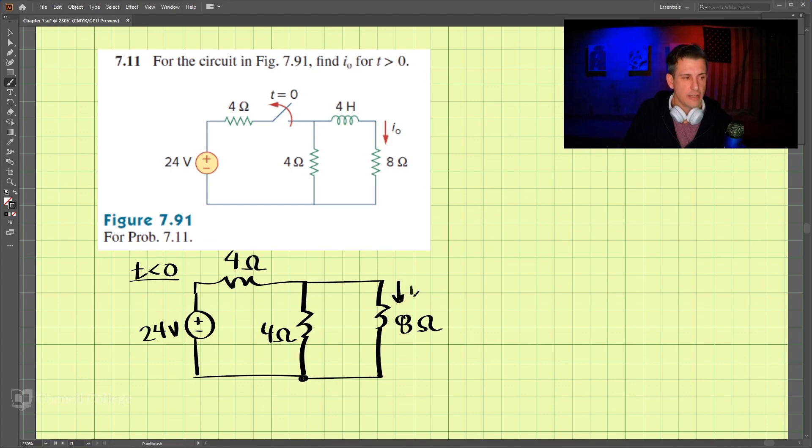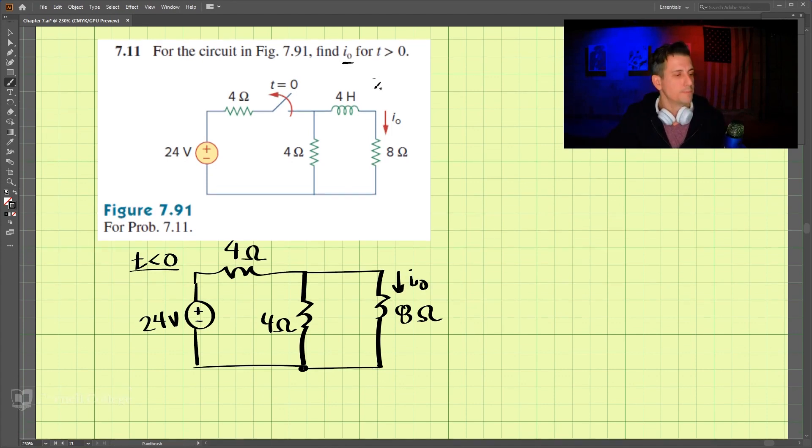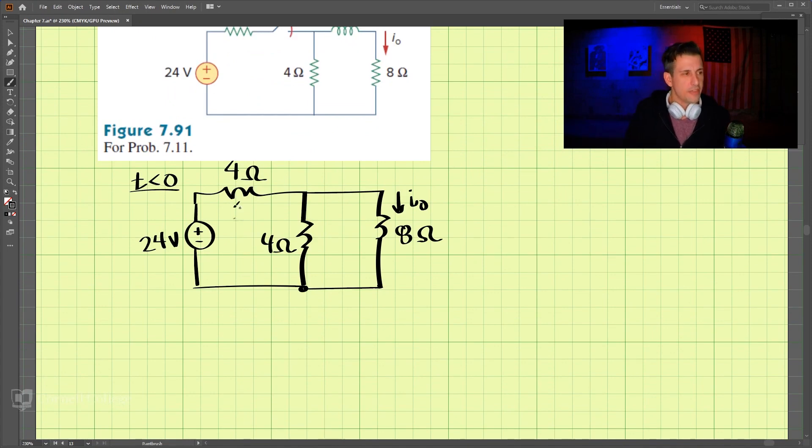Now let's try to find I-naught, because that's what we're looking for in the problem. And I think we can start by a source transformation. Remember, a source transformation, V-source equals the I-source times R, here.